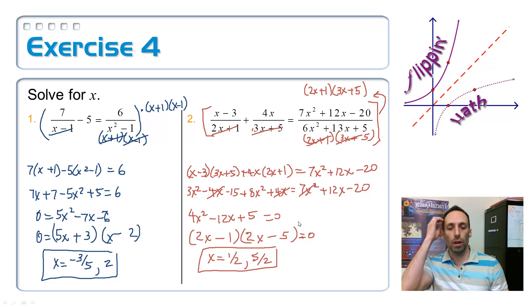Distribute, simplify, quadratic equation, factor that thing, you get 1 half and 5 halves. Do either one of those make the denominator equal to 0? Almost. That 1 half almost would have, because 2 times 1 half is 1, 1 plus 1 is 2. If it was a negative 1 half, then we would have had to throw it out.